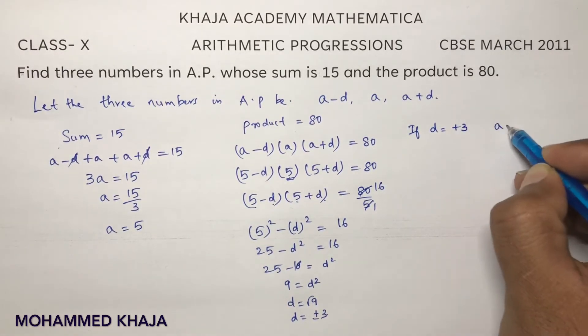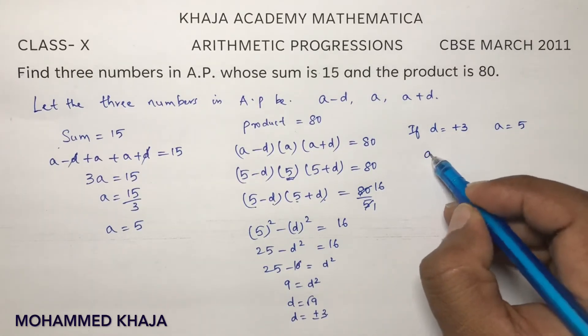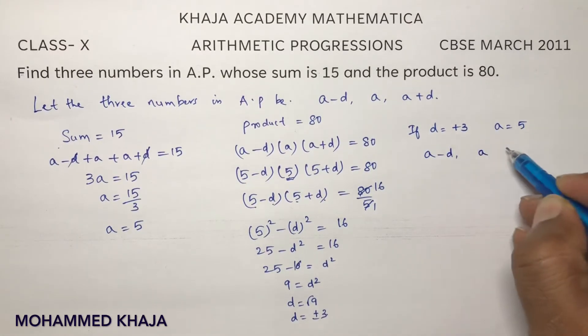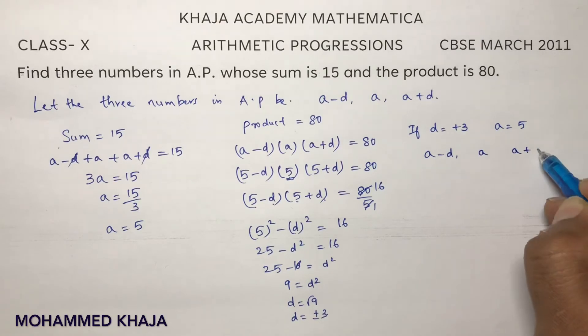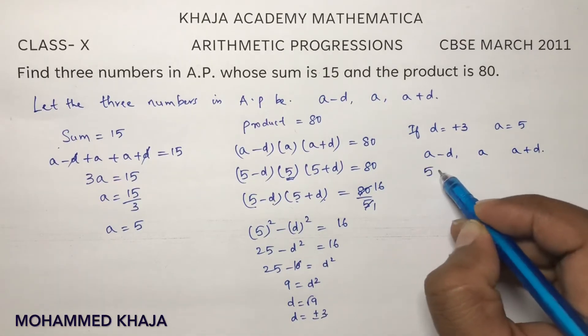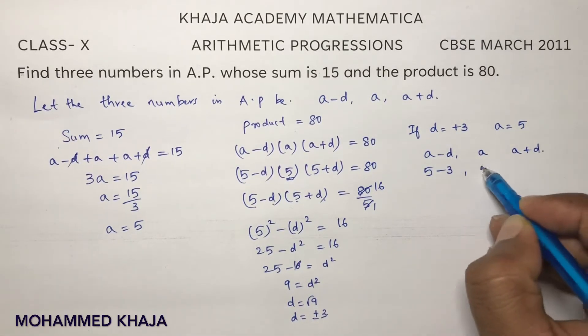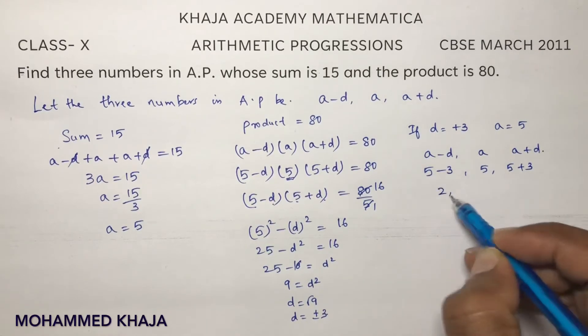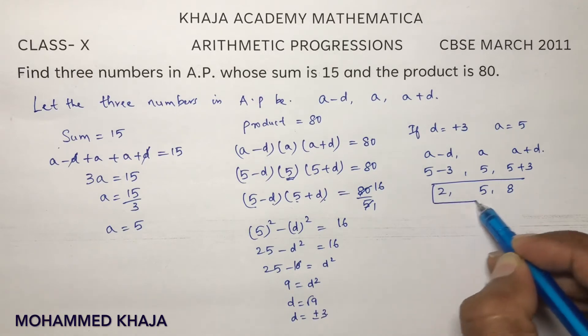Now see, if I will take D as plus 3 and A value is 5, the three terms A minus D, A, and A plus D: so A is 5 minus 3, 5, and 5 plus 3. So 2, 5, 8. These are the three terms if we will take D as plus 3.